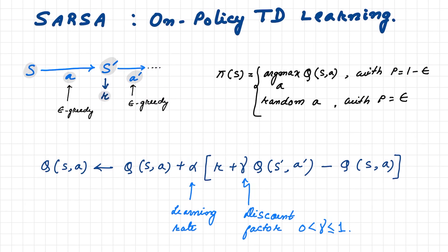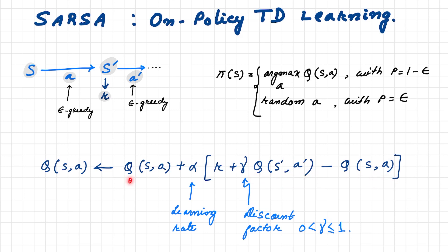SARSA is an on-policy temporal difference learning algorithm. Since we need to learn the optimal Q-value and not just the value function, we work with Q-values here. The SARSA update expression is exactly like the TD(0) rule, but uses Q instead of V. We start from an initial state, apply one action according to an epsilon-greedy policy, move to the next state, observe the reward, and then update the Q-value of the previous state-action pair.